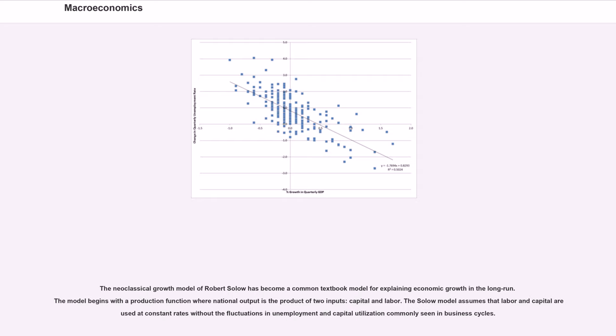The neoclassical growth model of Robert Solow has become a common textbook model for explaining economic growth in the long run. The model begins with a production function where national output is the product of two inputs: capital and labor. The Solow model assumes that labor and capital are used at constant rates without the fluctuations in unemployment and capital utilization commonly seen in business cycles.